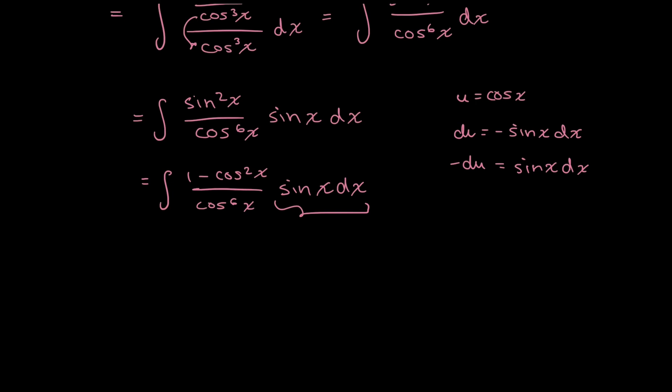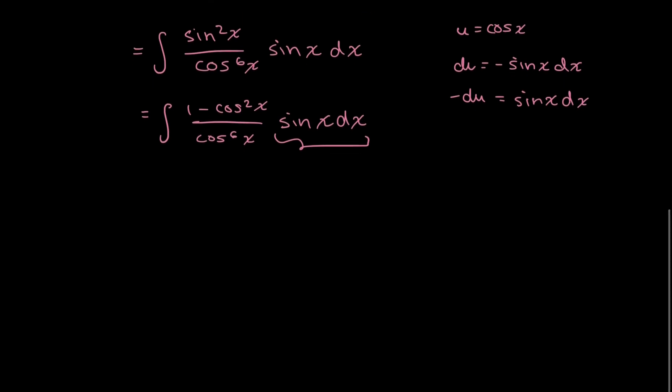Now all I have to do is rewrite this integral in terms of my u and what I just defined as u and du. So I'll go ahead and take that negative out to make things easier for me. And so instead of cosine, I'll have u. So 1 minus u squared and u to the power of 6 in the denominator. And then that sine x dx term just goes to du because I took out the negative.